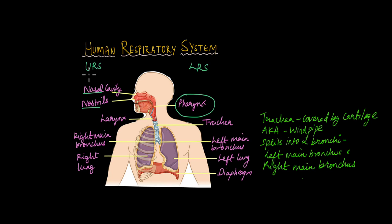In a previous video, we talked about the upper respiratory system that is made up of the nostrils, the nasal cavity, the pharynx and the larynx. In today's video, we'll talk about the lower respiratory system which includes the trachea, the two main bronchi, the left and the right lungs, the alveoli that make up the lungs and the diaphragm.